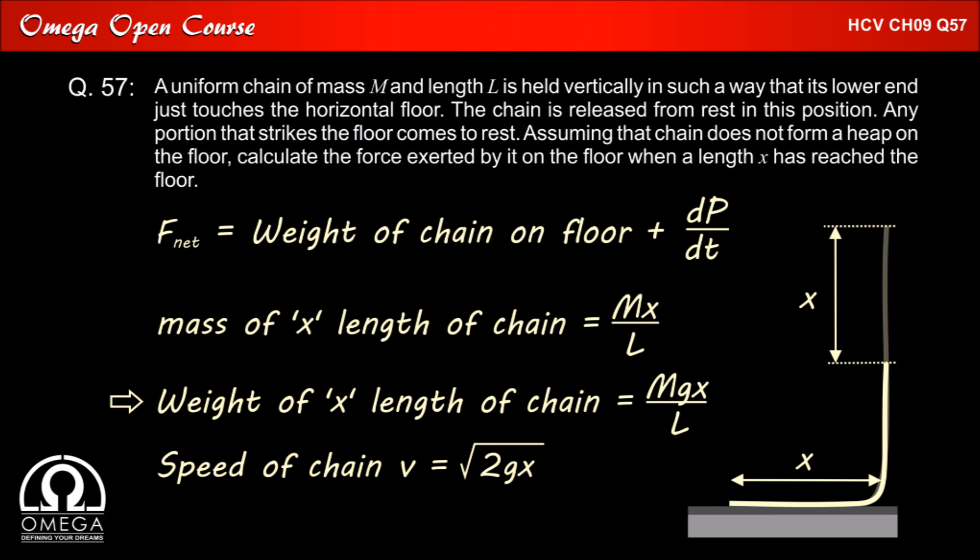Also, as the chain is falling freely under gravity, the speed of the portion of the chain in air after falling distance X is given by v = √(2gX).